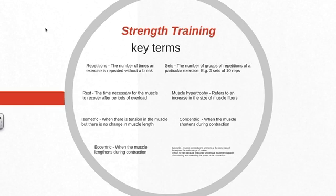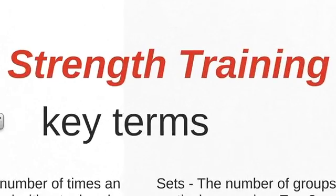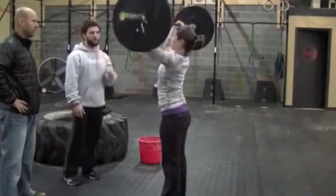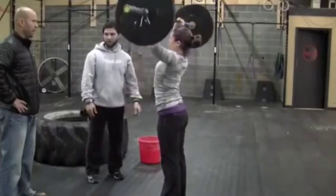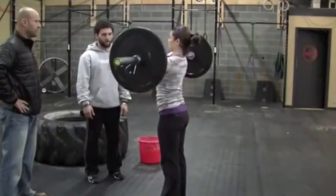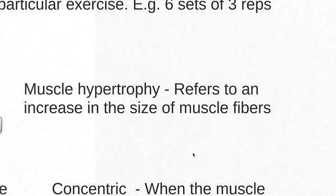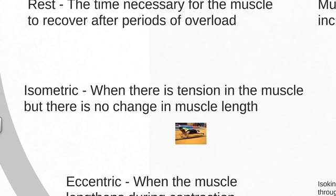Before going into the different types of equipment, it's important to cover some key terms. Repetitions is the number of times an exercise is repeated without a break. Rest is the time necessary for the muscles to recover after a series of repetitions. Muscle hypertrophy refers to the increase in the size of the muscle as a result of resistance or strength training.